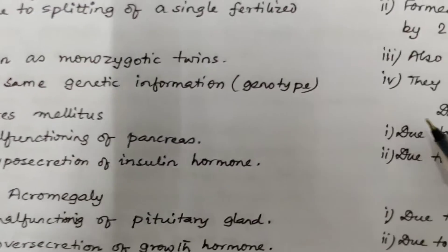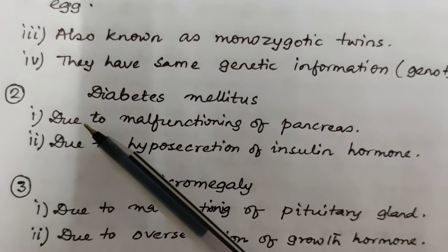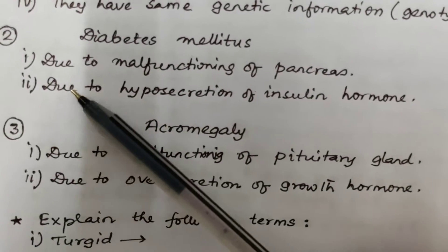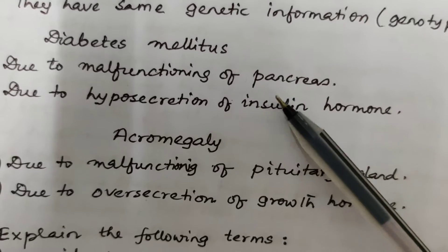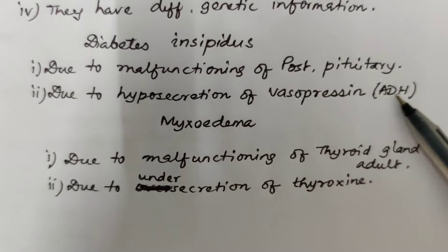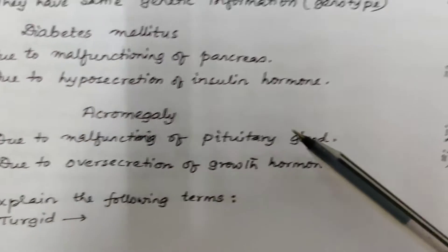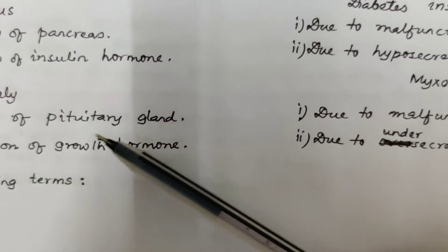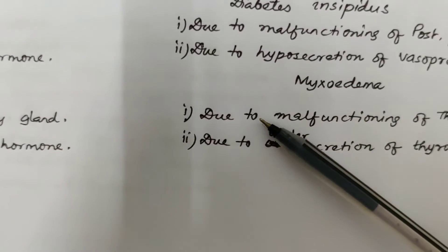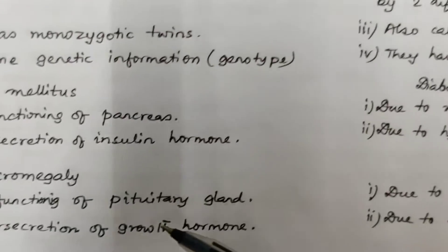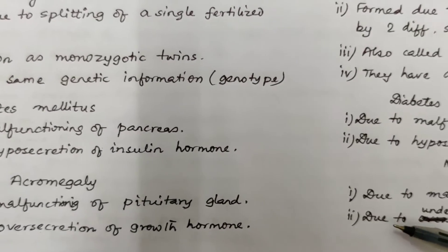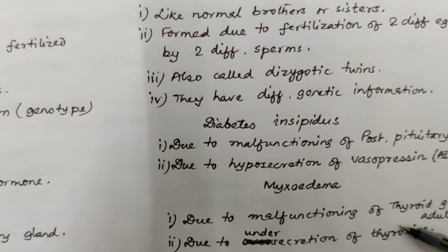Difference between diabetes mellitus and diabetes insipidus: diabetes mellitus is due to malfunctioning of the pancreas and hyposecretion of insulin, while diabetes insipidus is due to malfunctioning of the posterior pituitary gland and hyposecretion of vasopressin or ADH. Acromegaly is caused due to malfunctioning of the anterior pituitary gland involving over-secretion of growth hormone, whereas myxedema is caused due to malfunctioning of the thyroid gland in adults with under-secretion of thyroxine.